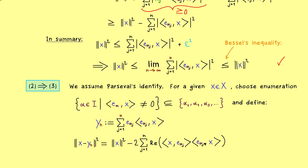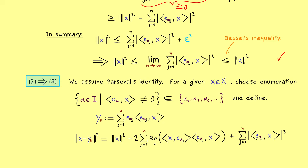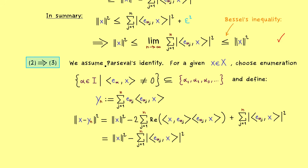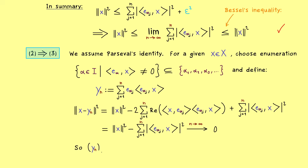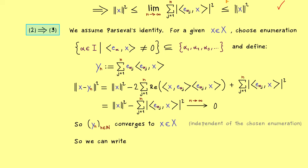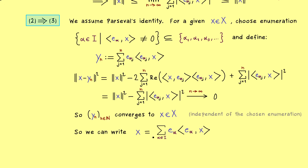We calculate the difference between x and y_n. We can copy the calculation from before since we have exactly the same combination, just with our coefficients lambda_j now fixed. In the real part we have the two inner products multiplied, and the last term is a sum over the absolute value squared. Taking the real part does not change anything, and we can combine the terms. What remains is exactly what we know from Parseval's identity — sending n to infinity gives 0. So y_n converges to x, and the sequence y_n is convergent to x regardless of the choice of enumeration — exactly the statement in claim 3.